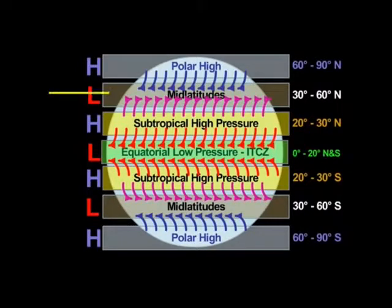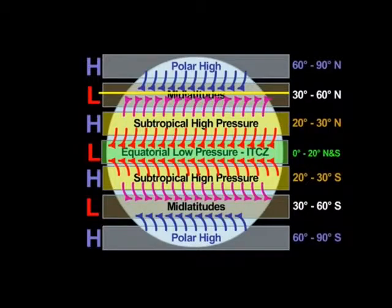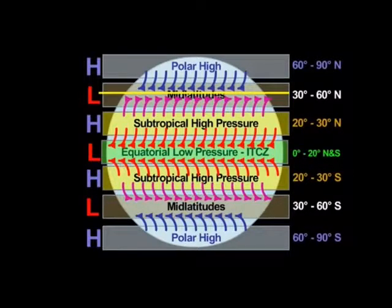Closer to us, in the mid-latitudes, we're going to be affected by low pressures. Stepping back, we now have a whole snapshot of a very generalized model of the world's pressure belts. We can visualize why arrows bend right in the northern hemisphere and left in the southern hemisphere. The colors also matter — red illustrating warm, purple meaning warm but not as warm as the equatorial low pressure, and cold being a key focal point for understanding differences from place to place on Earth.